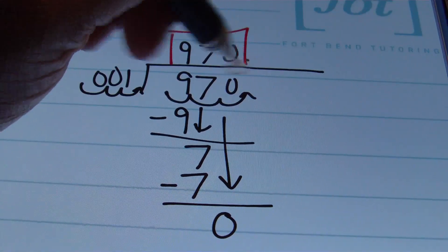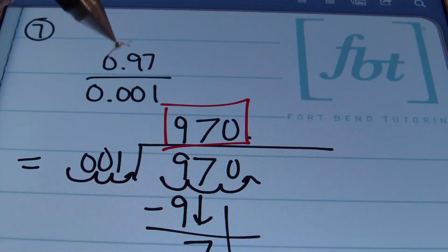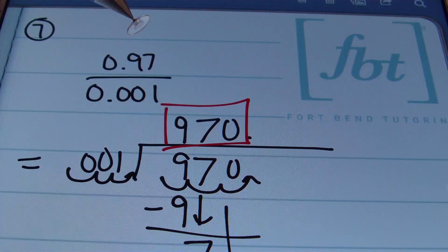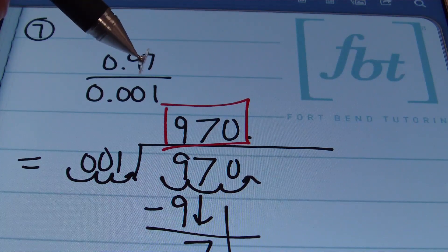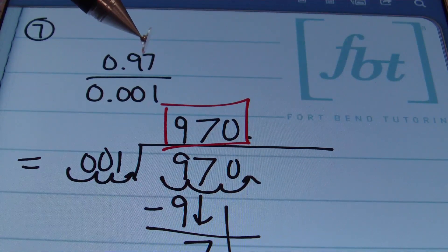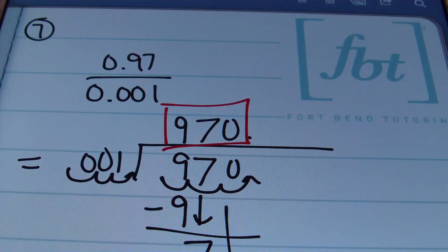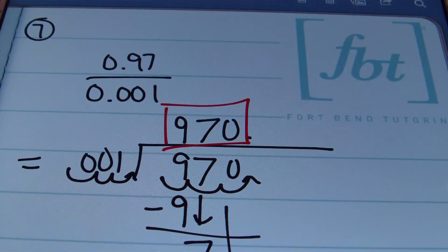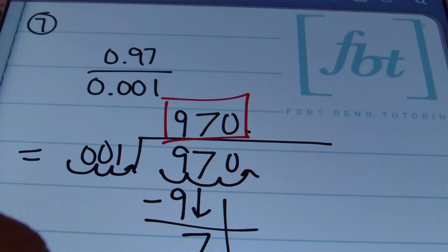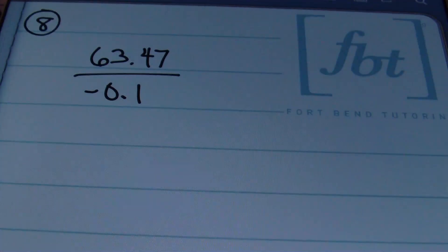Just like the last problem, here's a shortcut: anytime you're dividing by 0.001 — one thousandth — all you have to do is move the decimal three places to the right. If dividing by one hundredth, move it two places right; if dividing by one tenth, move it one place right. Be aware of working with powers of ten. If you forget the shortcuts, simply use long division and you'll get the right answer. That's problem number seven.